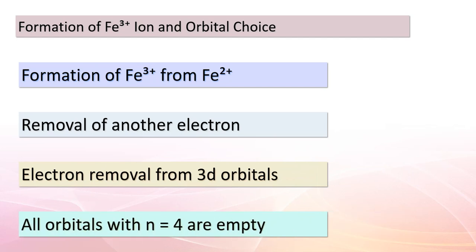Building on our previous knowledge, we now delve deeper into the ionization process of iron atoms. When Fe²⁺ undergoes further ionization, it transforms into Fe³⁺. In this case, another electron is removed — but from the 3d orbitals. The reasoning is that all orbitals with n=4 are now vacant. This step highlights the intriguing nature of electron configuration and the patterns that guide ionization.